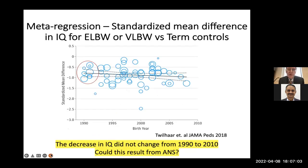These are meta-regression analyses standardized to mean difference in IQ for extremely low birth weight or very low birth weight infants versus term controls. The dark curve intercepts at about half a standard deviation below normal. Each blue circle represents a study, and the size of the circle represents the number of patients. Basically, there has been no improvement in IQ between 1990 and 2010.